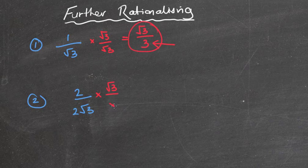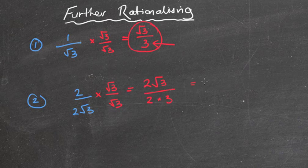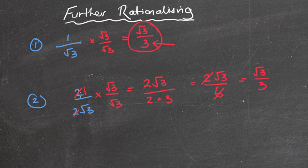Likewise for two over two root three, I can times top and bottom by root three as well. I could do two root three if I wanted to, but it means I'd have to simplify at the end. So I get two root three over three times three, which is two root three over six. I can simplify that: two goes into two once, two goes into six three times, giving root three over three. So that's the basic recap - now what do we mean by further rationalizing?